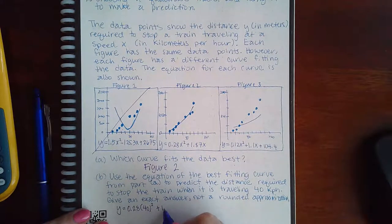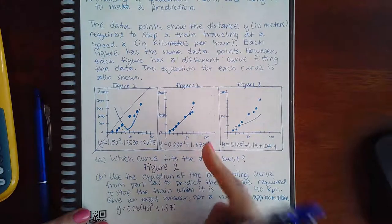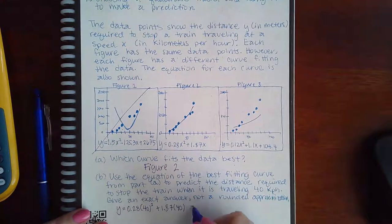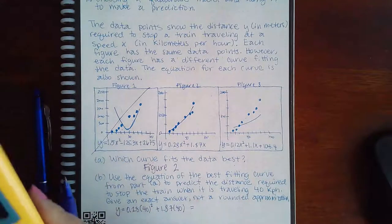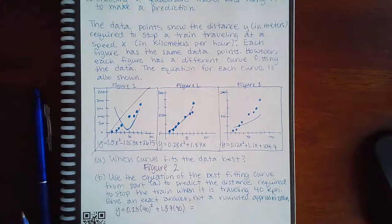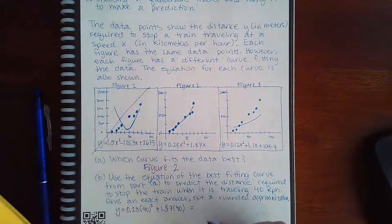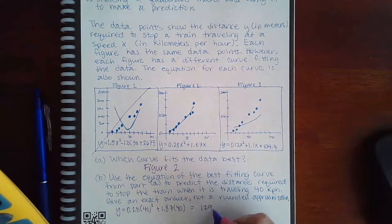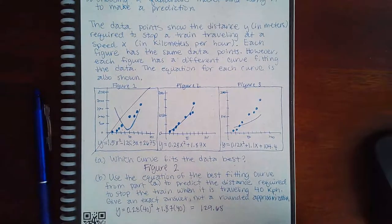If I plug that in my calculator, 0.28 times 40 squared plus 1.87 times 40, I end up with the value 129.68. And they don't want me to round it, they want me to give them this exact answer.